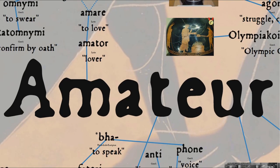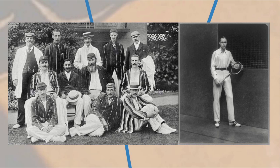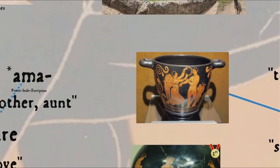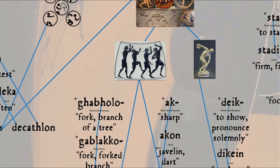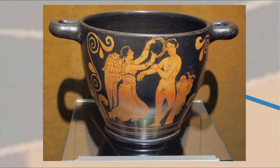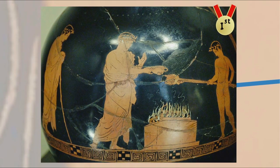Another thing that Coubertin and his followers got wrong was the amateur nature of the Olympics. They held that the modern Olympics had to be a competition among gentlemen amateurs who received no pay or reward, but this was never true of the ancient Olympics. In fact, it's right there in the word athlete, which comes from the Greek athlon, meaning prize. Athletes competed for prizes, and often ancient Olympic victors could be rewarded quite handsomely by their home city. The very first Olympic champion was Korybas of Elis, whose occupation was listed as cook — hardly a gentleman amateur.